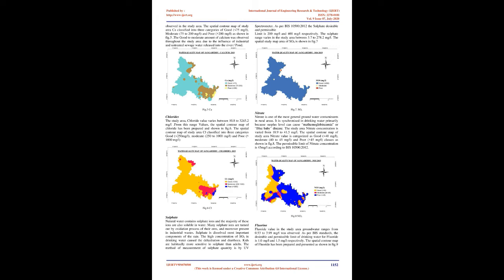The spatial contour map of calcium (Ca) for the study area is classified into three categories: good (below 75 mg/L), moderate (75 to 200 mg/L), and poor (greater than 200 mg/L), as shown in Fig. 5. Good to moderate amounts of calcium were observed throughout the study area due to the influence of industrial activities. As per BIS 10500:2012, the sulfate desirable and permissible limit is 200 mg/L and 400 mg/L respectively. The sulfate range varies in the study area between 3.7 to 278.2 mg/L, as shown in Fig. 7.